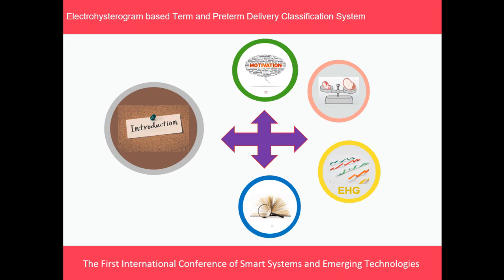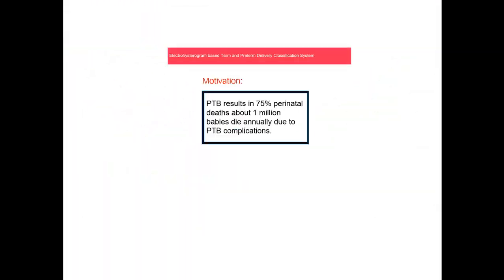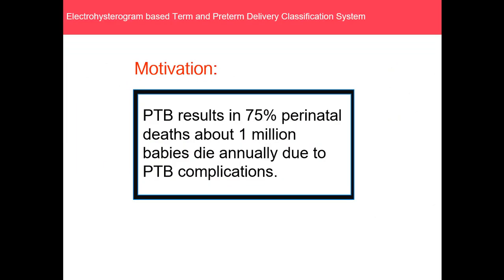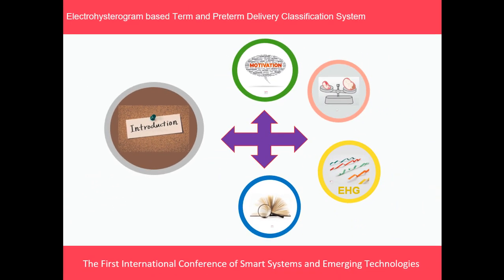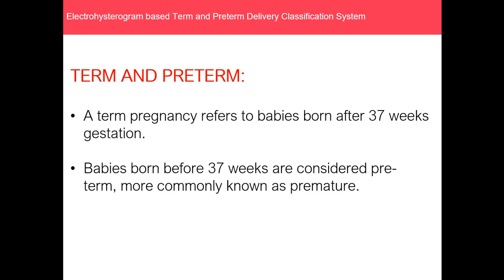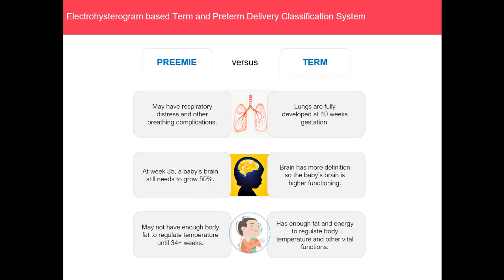Talking about the introduction, the motivation behind this research was that preterm birth results in 75% of perinatal deaths — that is about 1 million babies die annually due to its complications. A term pregnancy refers to babies born after 37 weeks of gestation, whereas babies born before 37 weeks are considered preterm, more commonly known as premature.